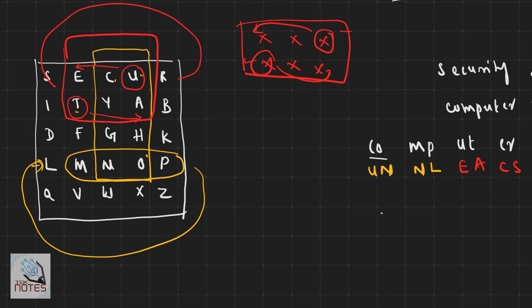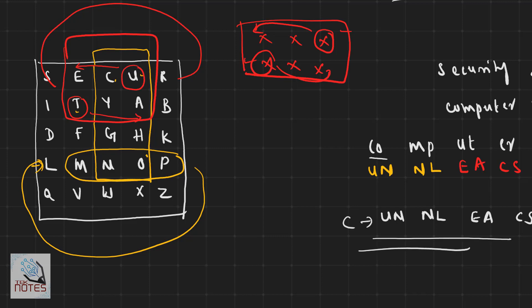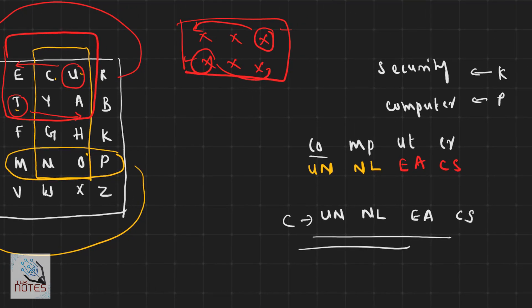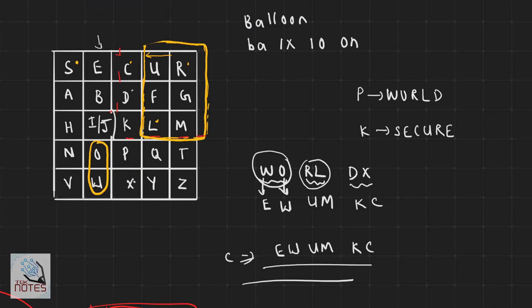The resulting cipher text is N, L, E, A, C, S. Now we are clear on encryption. For decryption, you apply the reverse rules — using the same matrix but reversing the substitution direction.